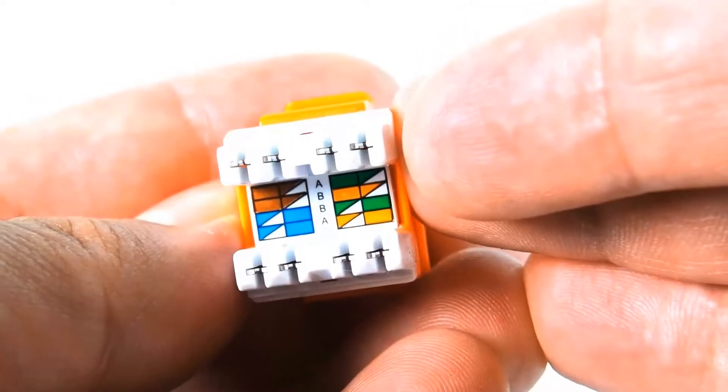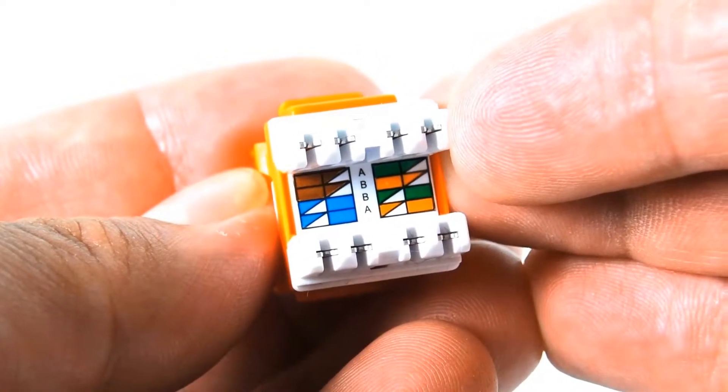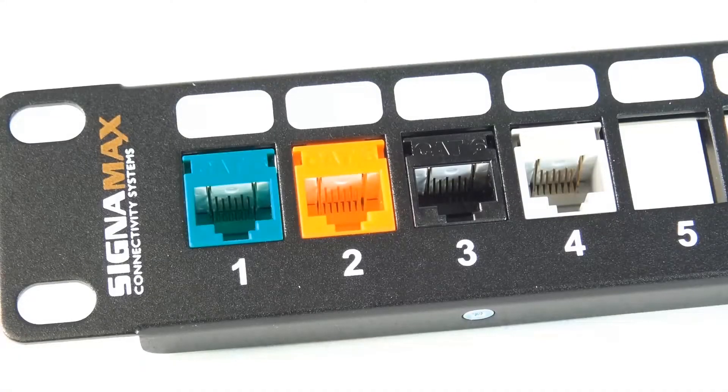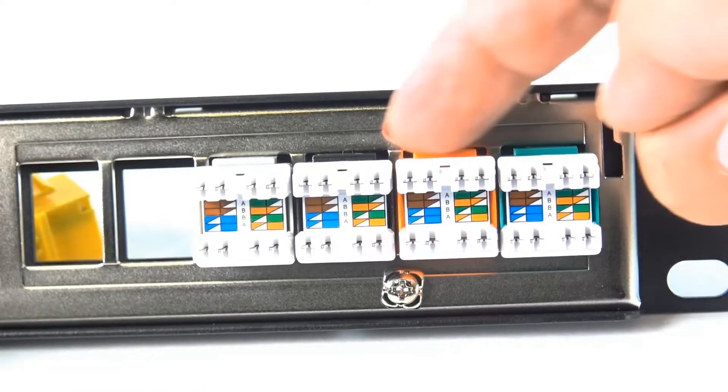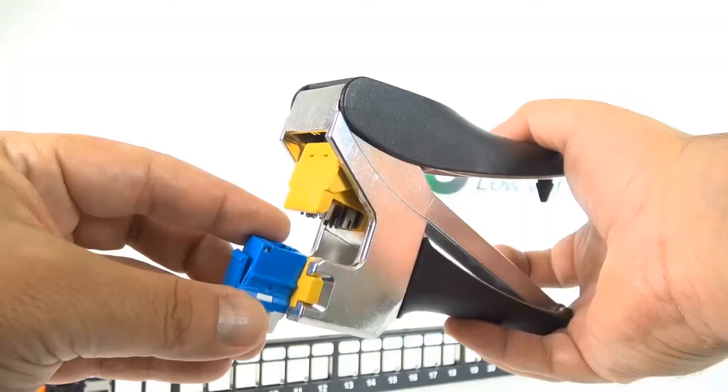You also have an easy to read 568B wiring scheme with the color code there. These are slim profile for highest density applications. There's a patch panel if you want to stack them next to one another.